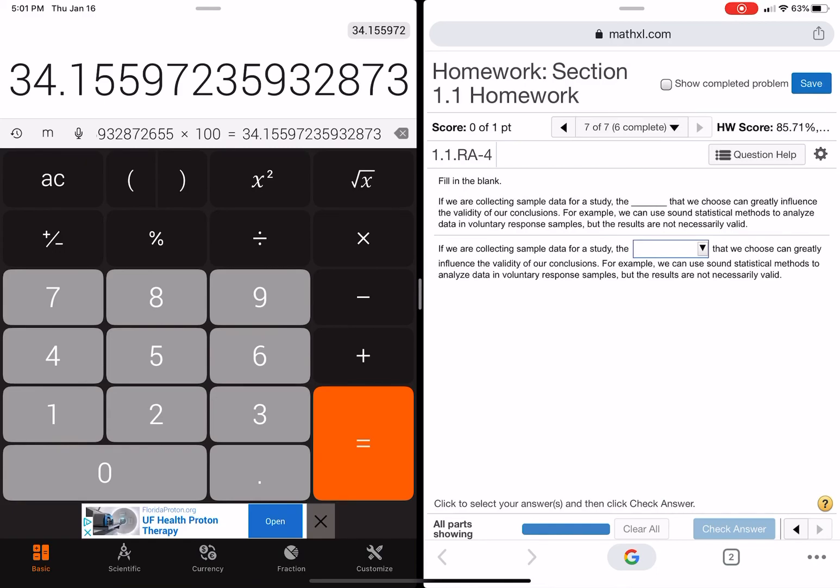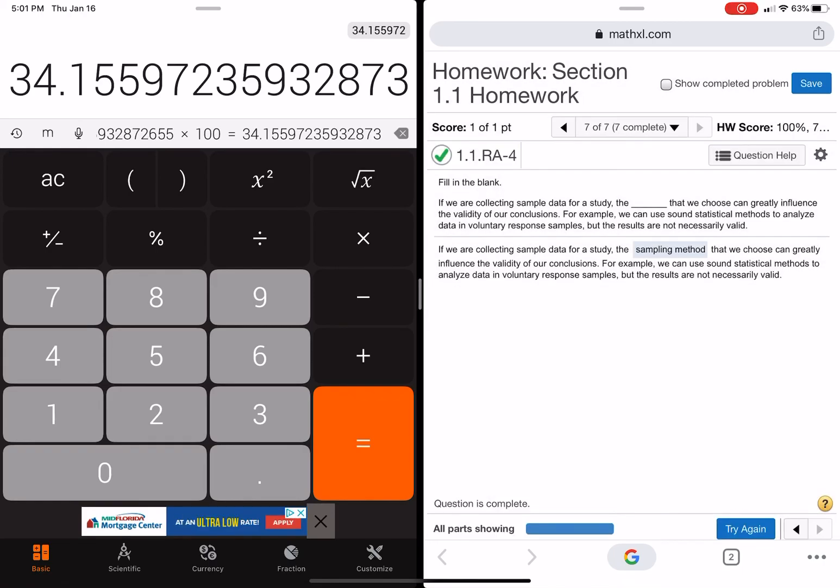If we were collecting the sample data, study the... What's important is what would influence the validity of conclusions the most would be how we picked that sample, which is the sampling method. How you collected data is probably the most important. One more. Are we done? Okay, so that's it for section 1.1.